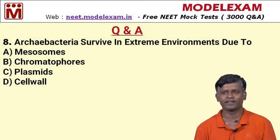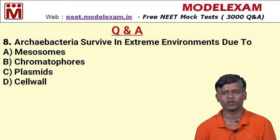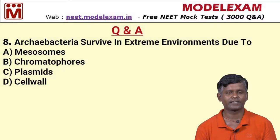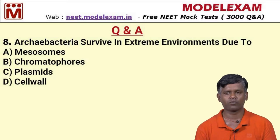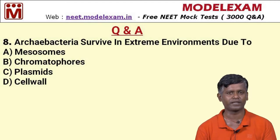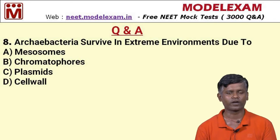Question number eight: archaebacteria survive in extreme environments due to — option A: mesosomes, option B: chromatophores, option C: plasmids, option D: cell wall. Mesosomes are present in all bacteria, not specific to archaebacteria. Chromatophores are coloring agents and not relevant here. Plasmids are involved in antibiotic resistance and toxin production, not a characteristic of archaebacteria. The characteristic feature is the cell wall — the archaebacterial cell wall allows them to survive and tolerate extreme temperatures. So option D is the answer.